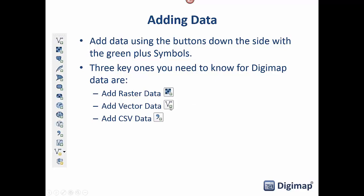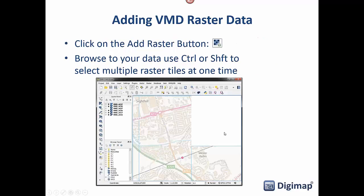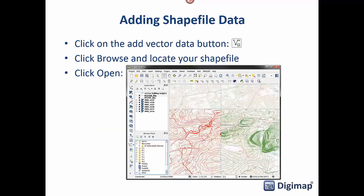The three key add-data buttons you need to know about are: add raster data, add vector data, and add CSV data. Adding raster data is very simple — click the add raster button, browse to your data, and if you've got multiple tiles you can use Ctrl or Shift click to select them all at once, then click Open and they'll all appear in your map.